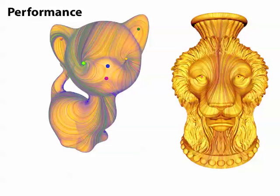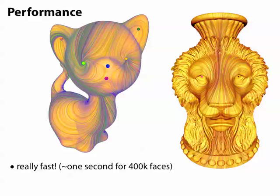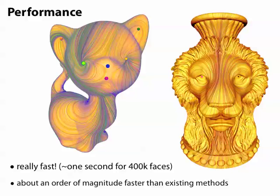Okay and now some results. So performance is really good. For instance, we can edit singularities on this lion mesh of 400,000 faces in about a second on a standard laptop. And on this kitten of 20,000 faces, we can move singularities around in real time. And so this is about an order of magnitude faster than existing methods.